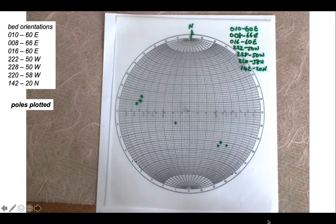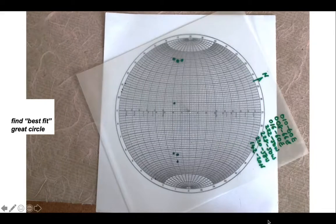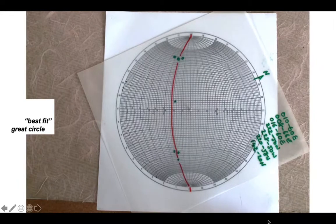There are the poles to the seven beds. Now we need to find the great circle upon which these might lie, in other words a best fit great circle. We just spin the tracing paper around to find the best fit great circle. There we go, something like that. There's a bit of uncertainty, but the red trace of the great circle there is more or less a best fit to the seven poles to bedding that we've got.